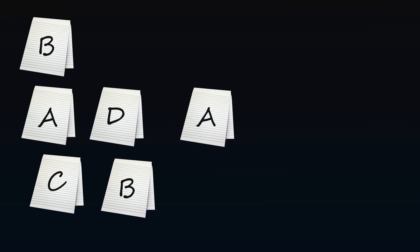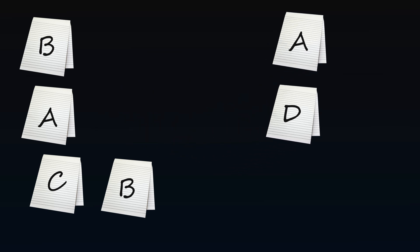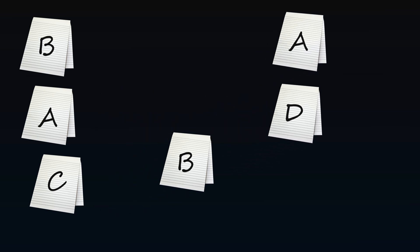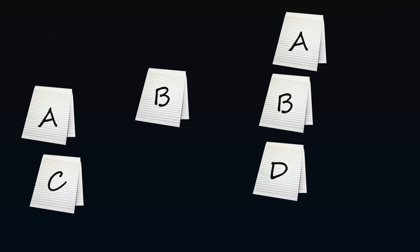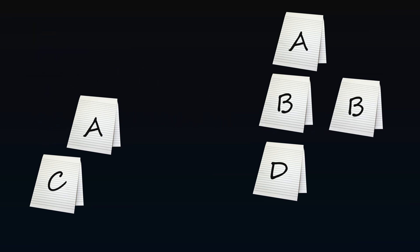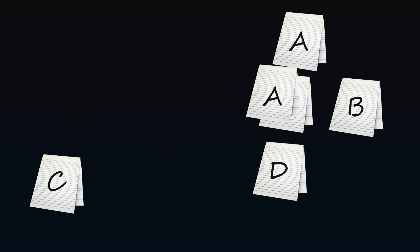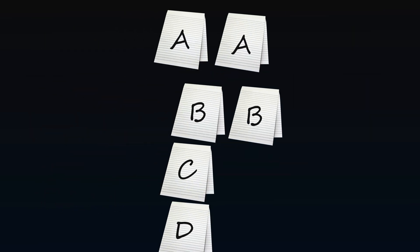Imagine you have a big pile of papers to organize. Instead of looking at each paper one by one, a batch process would involve picking up a stack of papers and sorting through them together. You might group similar papers, discard irrelevant ones, or make notes on the entire stack. This way, you're processing multiple papers at once, saving time and effort.